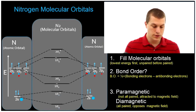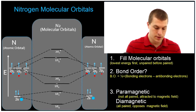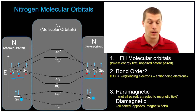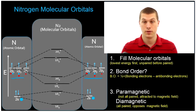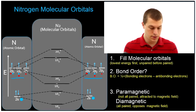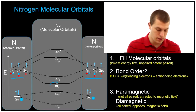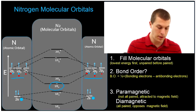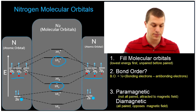My p orbitals also mix. Two of my p orbitals combine to give me pi type bonds. I see those here — those are my pi type bonding orbital, and these are my pi type antibonding orbital.